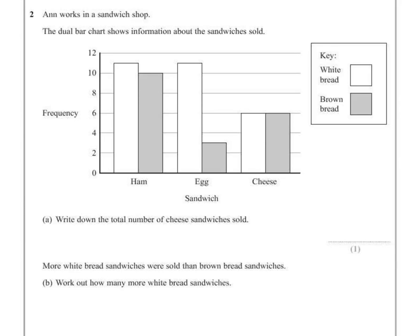Question 2. Anne works in a sandwich shop. The dual bar chart shows information about the sandwiches sold. If we look at the key, it says that the white boxes represent white bread and the grey boxes represent brown bread.